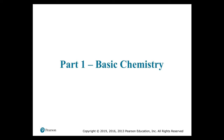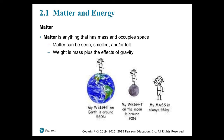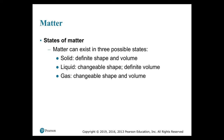Part 1: Basic Chemistry. Chemistry is the science that deals with the structure of matter, defined as anything that takes up space and has mass. Mass is a physical property that determines the weight of an object in Earth's gravitational field. For our purposes, the mass of an object is the same as its weight. If we were to ride on the space shuttle, we would find that the two are not always equivalent — in orbit we would be weightless, but our mass would remain unchanged. Matter exists in solid, liquid, and gaseous states.